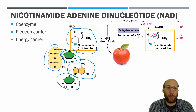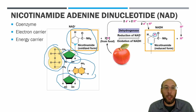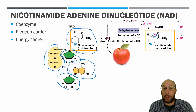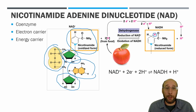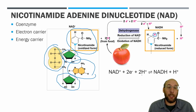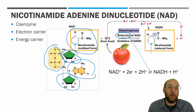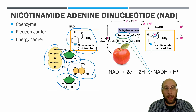This reaction is reversible: if you remove the hydrogen and electrons from NADH, it gets oxidized back to NAD⁺. A simpler way to write this is: NAD⁺ + 2e⁻ + 2H⁺ → NADH + H⁺. Forming NADH is reduction; forming NAD⁺ is oxidation.